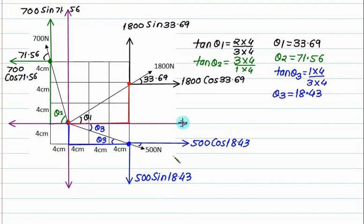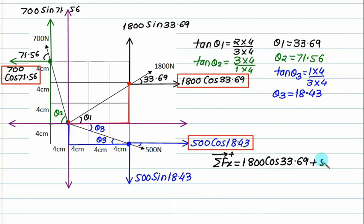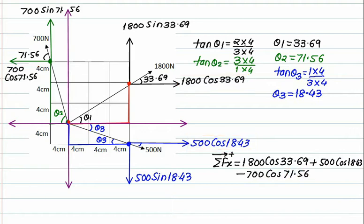Now, once we finalize the angles, we identify forces along the x direction. Two forces are positive and one force is negative along x. So sigma Fx — rightward positive — equals 1800 cos 33.69 plus 500 cos 18.43 minus 700 cos 71.56. The answer is positive, so the resultant x-component goes rightward.